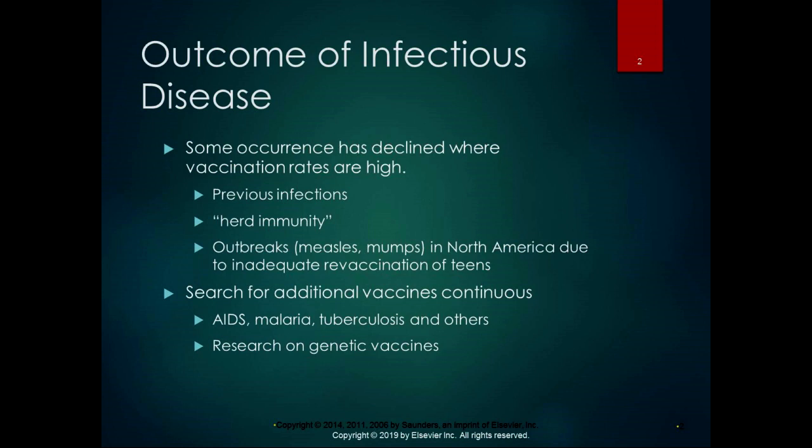There have been some more recent outbreaks of measles and mumps in North America as a result of inadequate revaccination of teenagers. When people don't get their booster vaccines, there's more chance for disease to develop. Microbiologists and immunologists are looking for additional vaccines for many different things and doing research on genetic vaccines, and a lot of immunological research happens in cancer research and research for other diseases.